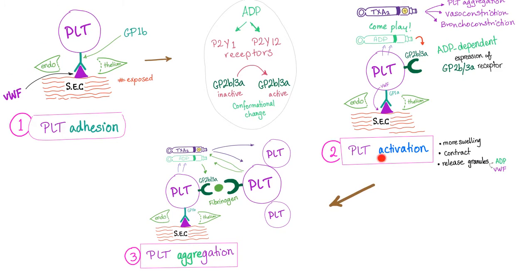Adhesion, activation, aggregation. First, adhesion. GP1B is a receptor on the platelet that adheres to the von Willebrand factor, which is bound to the subendothelial collagen.